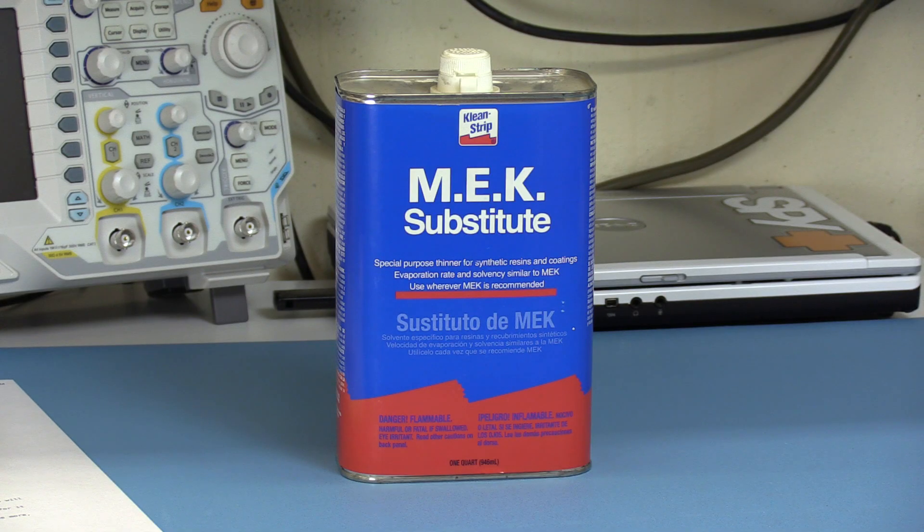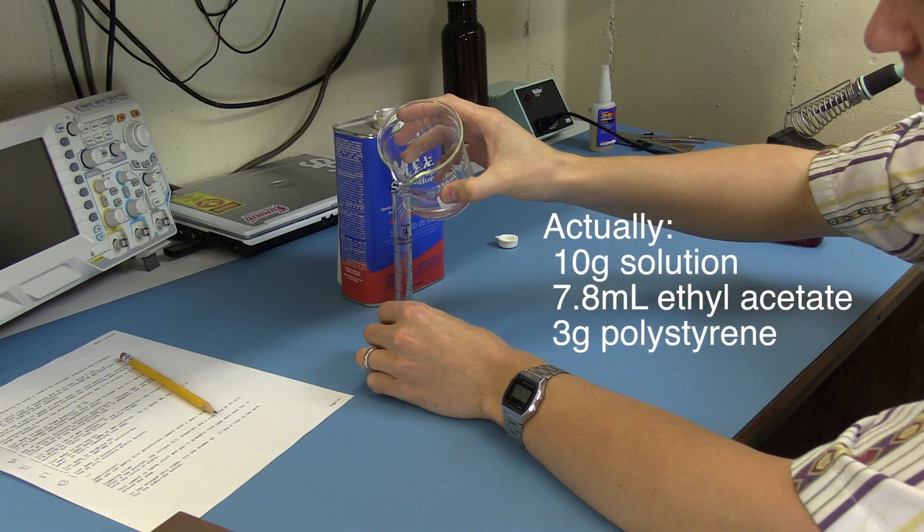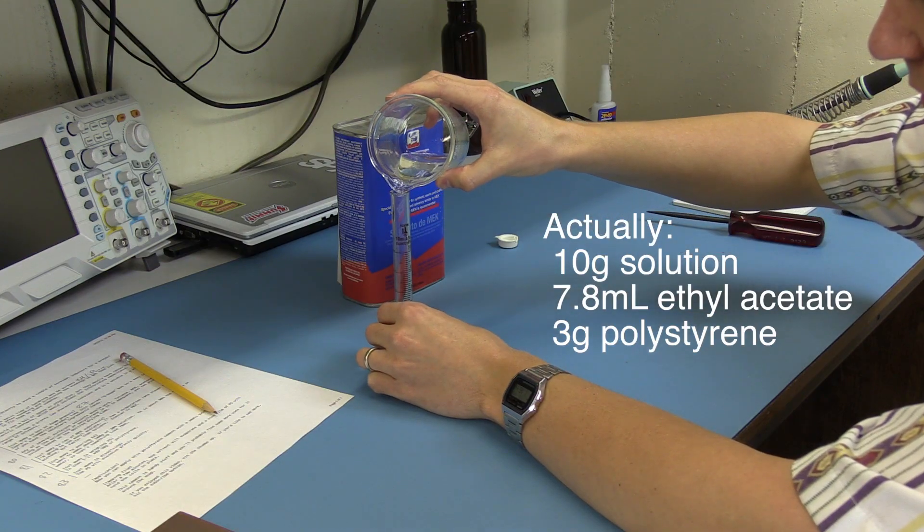In my case, I'm going to use ethyl acetate. It's got a slower drying rate than acetone, but faster than toluene. Pretty similar to methyl ethyl ketone, which it's often sold as a substitute for. I'd like to make about 100 grams of a 30% solution.